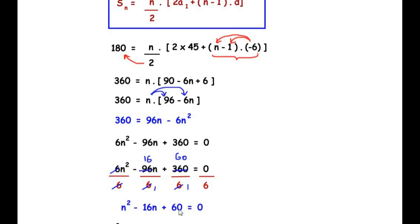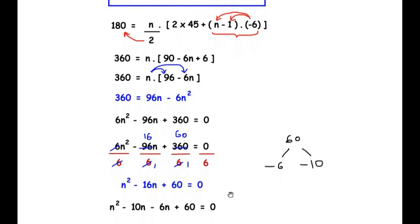Now we can factorize this equation. We need to find two factors of 60 such that when multiplied they give 60 and when added they give −16. The factors 6 and 10 multiply to give 60, but we need −16, so we use −6 and −10 because (−6) + (−10) = −16. We split the middle term and write: n² − 10n − 6n + 60 = 0.